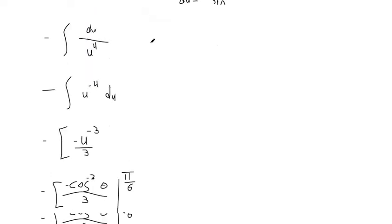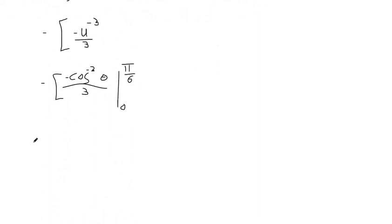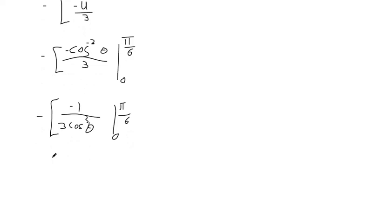Now we can finish this out by just substituting pi over six and zero in there. But it might be easier to move that negative to the denominator. So that's negative one over three cosine to the third theta. Same expression. I haven't done the limits of integration yet.